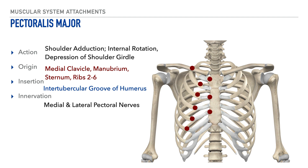Its insertion is on the intertubercular groove of the humerus, which we commonly refer to as the bicipital groove, and this insertion point is shown on the screen here. Lastly, its innervation is the medial and lateral pectoral nerves.